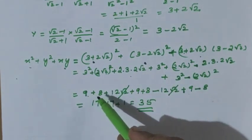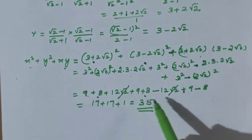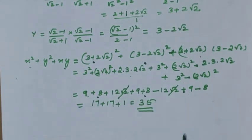Middle terms cancel, so remaining is 17 and 17, plus 9 and 8, that is 9 plus 8. Here it is a fraction, you do 1 only. So totally it is equal to 35.